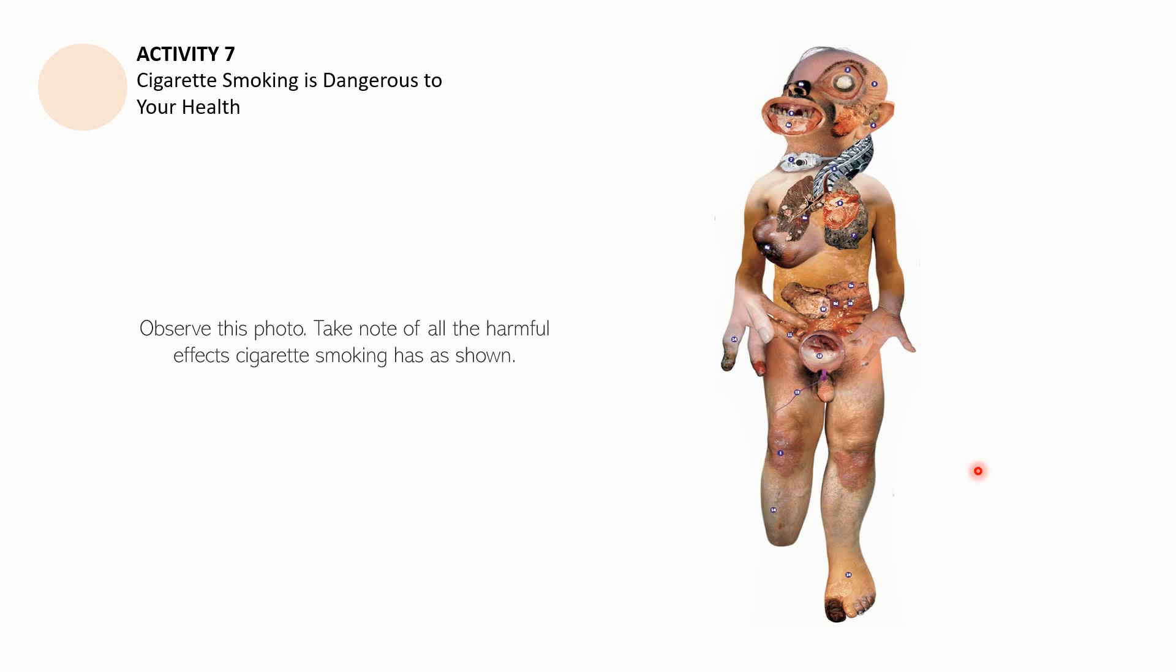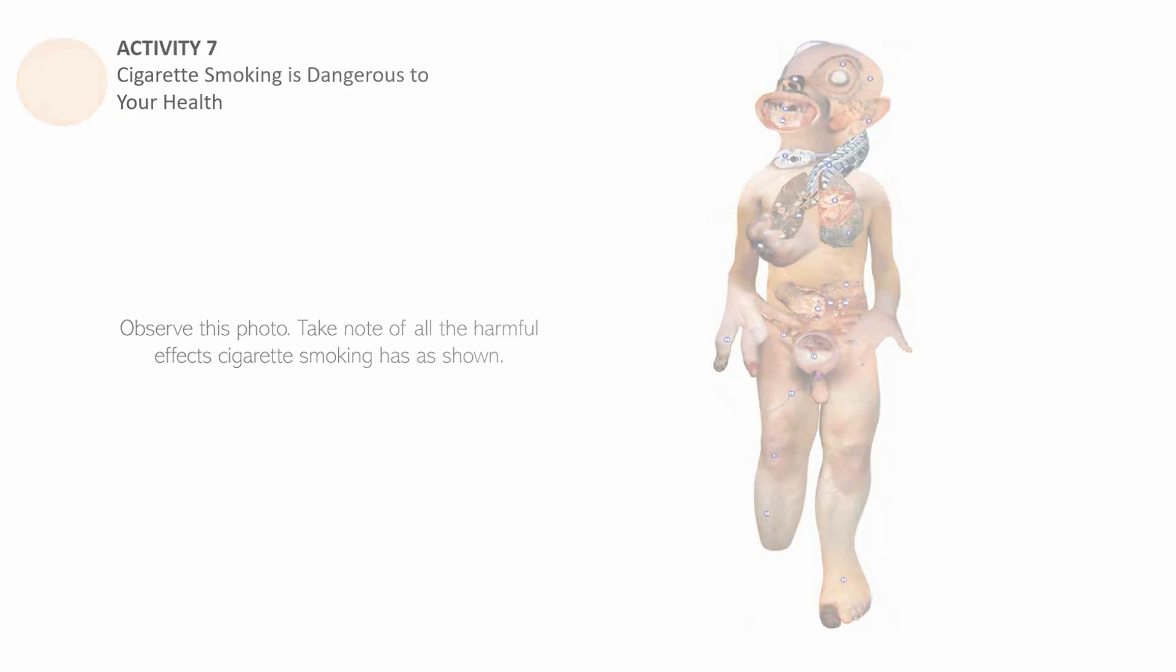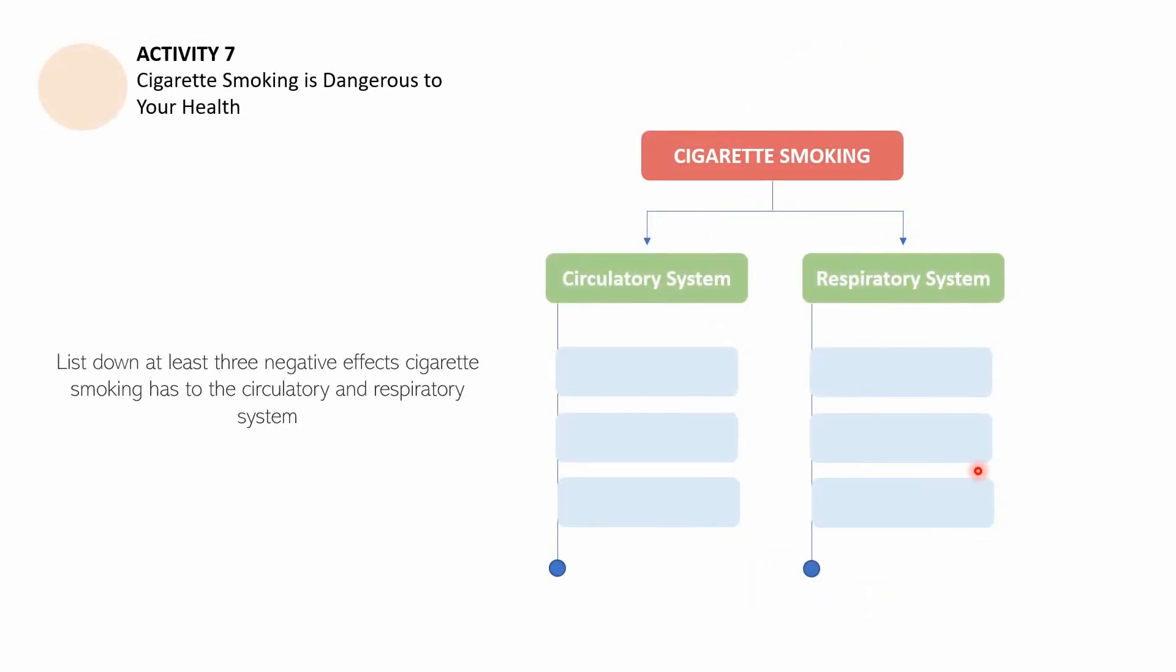You may pause this video if you want to. If you have decided to continue, let us now proceed with the following command. I would like you to draw cigarette smoking and its effects to the circulatory and the respiratory system. Write at least three negative effects of cigarette smoking to the circulatory system and three negative effects to the respiratory system. You may pause this video to finish this activity. If you have decided to continue, let us now proceed to the second part of this session.